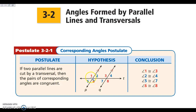Let's take a look. We have angles 1 and 3 are corresponding, 2 and 4 are corresponding, 5 and 7 are corresponding, and 6 and 8 are corresponding. If you look over here, you will see that your corresponding angles are congruent — they are equal to each other.